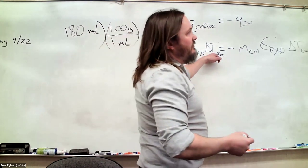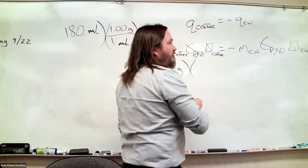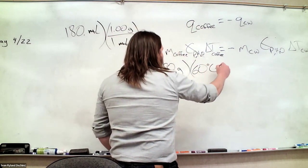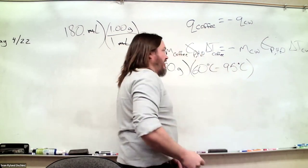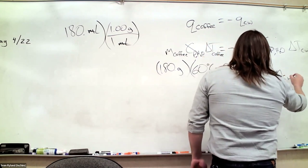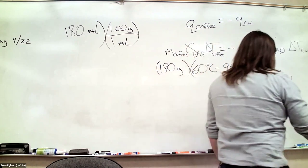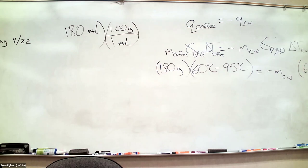Delta T for the coffee: final minus initial is 60°C minus 95°C. Here's what we're solving for. And delta T for the cold water is 60°C minus 23°C — we're trying to end at 60°C from a starting temperature of 23°C.